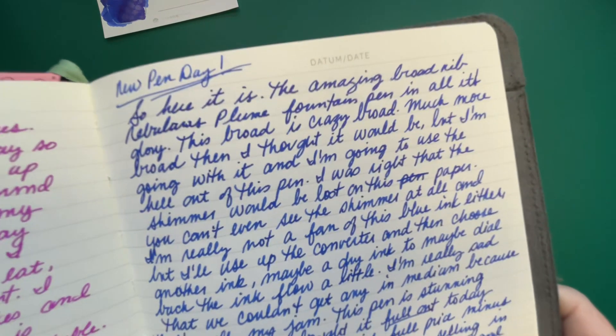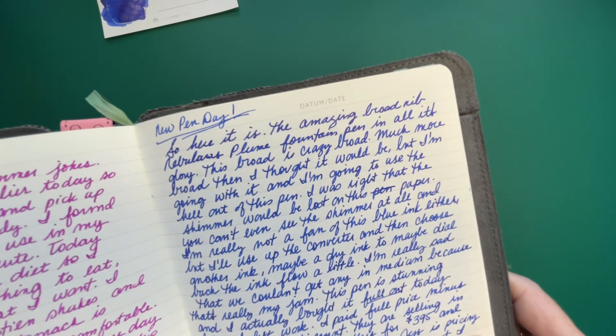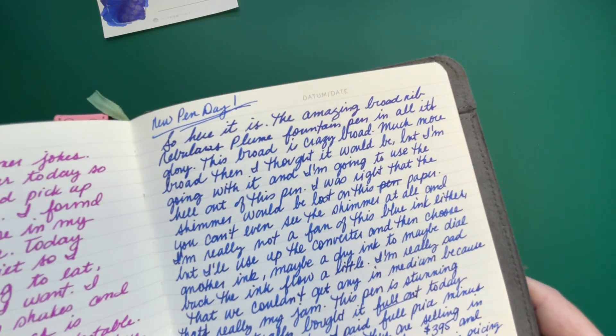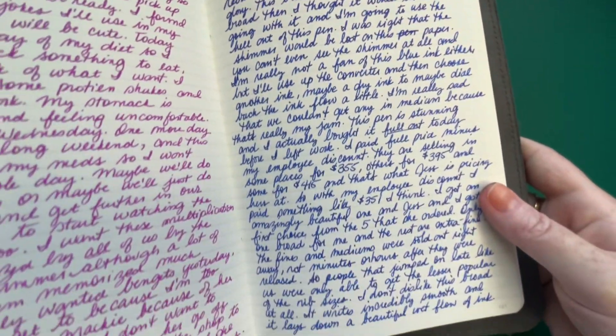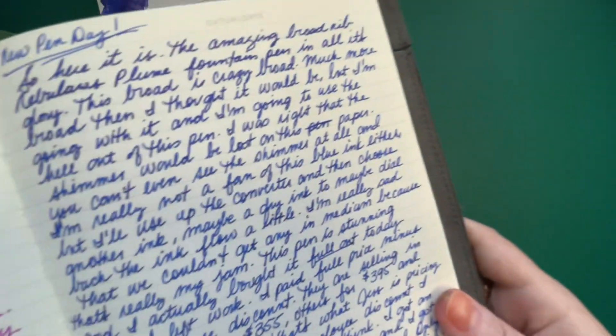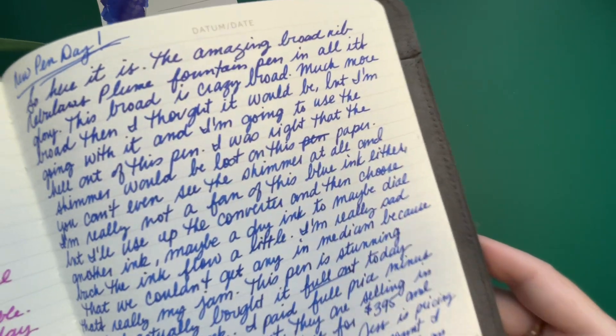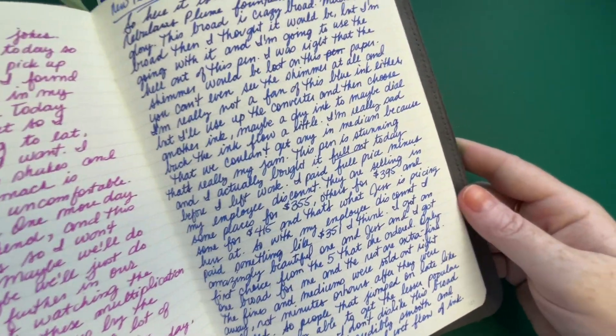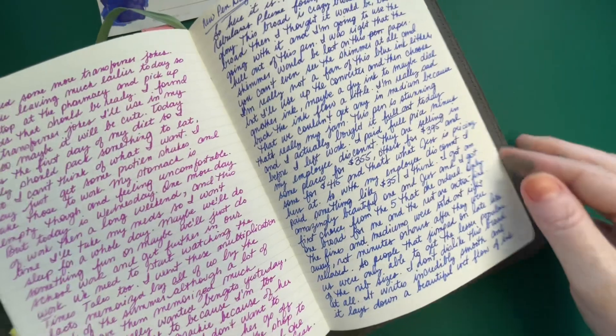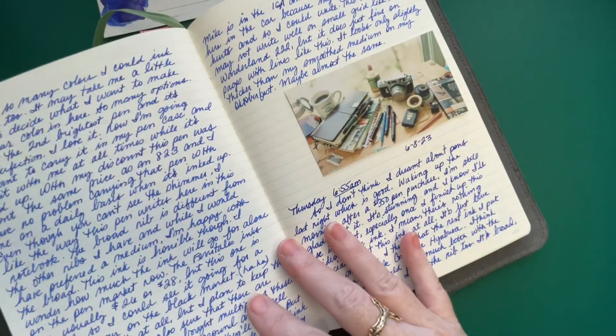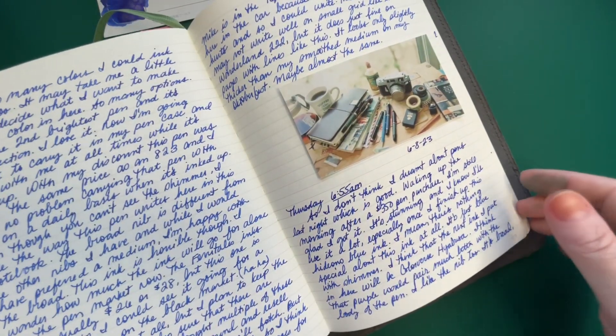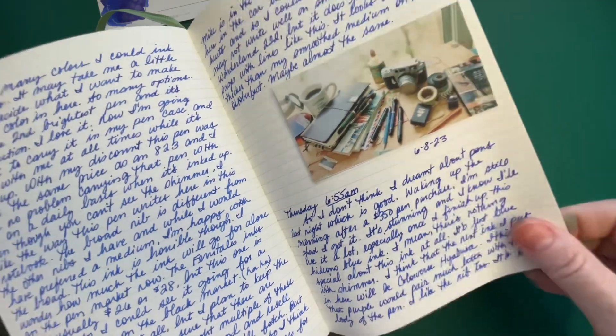All right, so here it is, the amazing broad nib nebulous plume fountain pen in all of its glory. These are the kinds of things that I wrote in my journal. And I don't know if you can really see, but do you see, do you know, it's just a blue. It is just a blue ink.